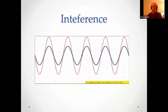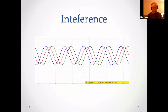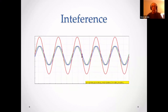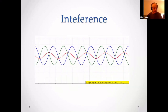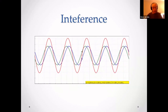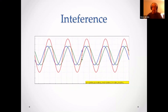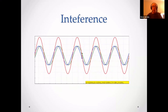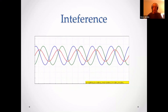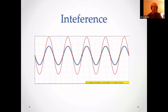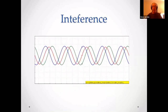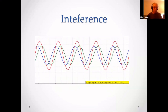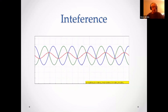This is a demonstration of constructive and destructive interference. Green waves are coming from the left, blue waves from the right, and the red wave is the interference pattern. You can see the interference pattern goes from very high to very low as the waves offset.